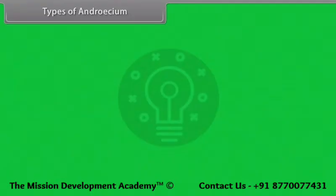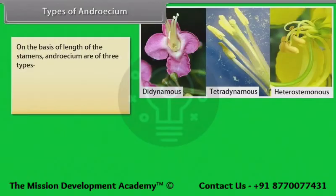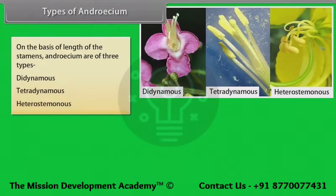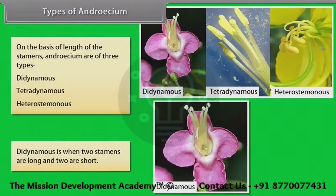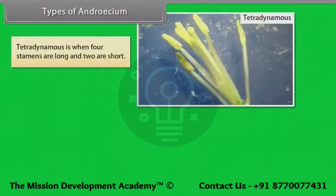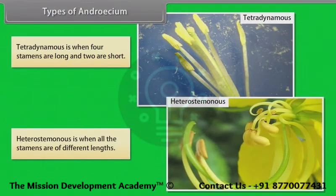On the basis of length of the stamens, androecium is of three types: Didynamous — when two stamens are long and two are short; Tetradynamous — when four stamens are long and two are short; Heterostaminous — when all the stamens are of different length.